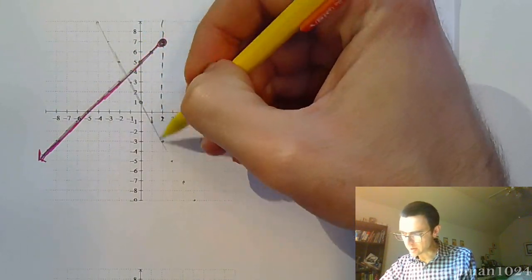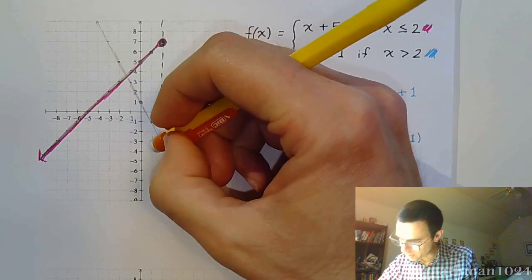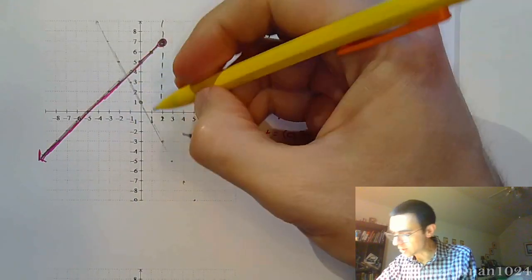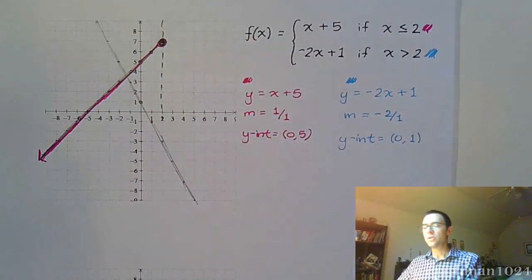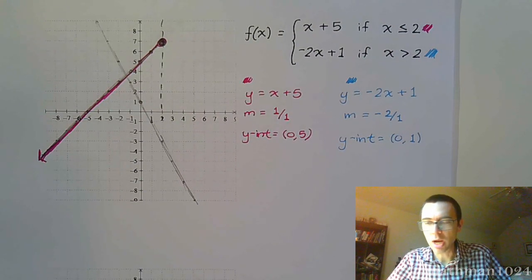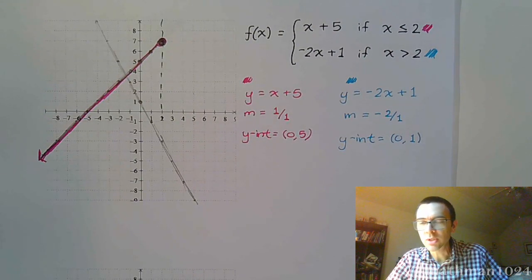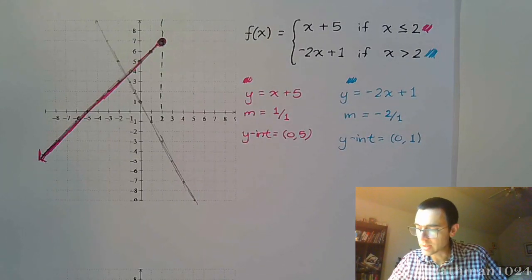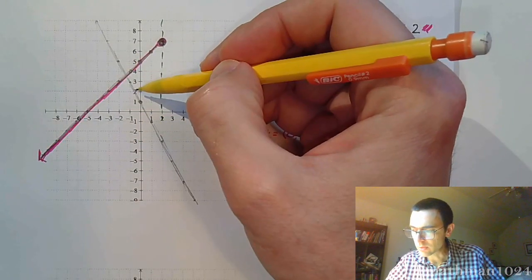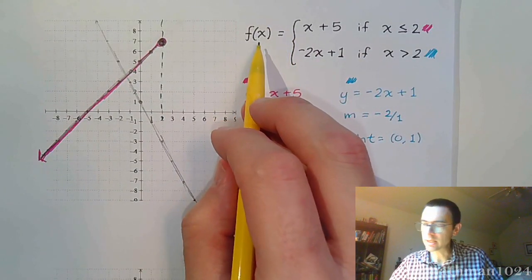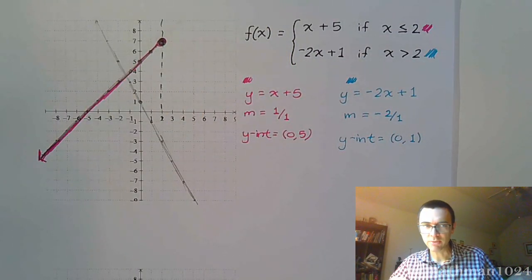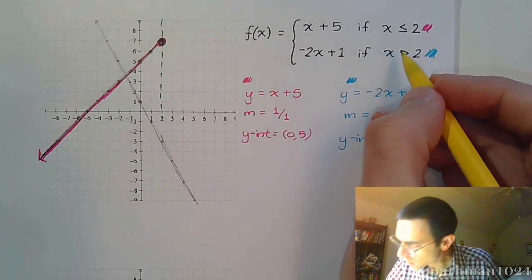We have a line that looks like that. If you connect the dots, you have this line. But you see where we have a problem. Functions are supposed to pass the vertical line test, and this would not pass. We have function notation, so it has to pass the vertical line test. But this guy fails. Almost.